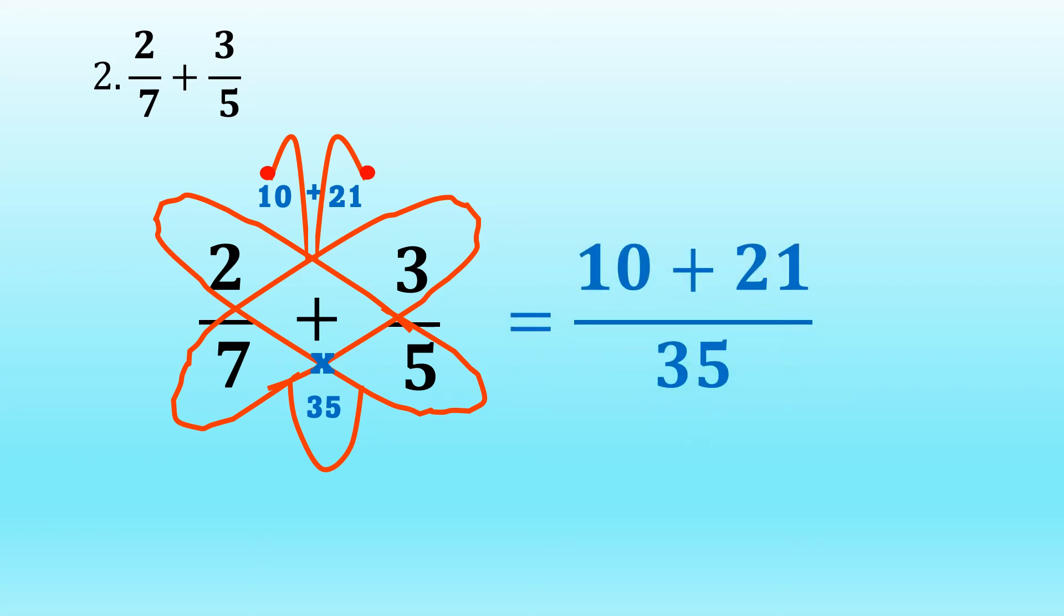Writing it formally, we can have ten plus twenty-one over thirty-five. So, ten plus twenty-one is equal to thirty-one. And then copy the denominator thirty-five. So, the sum of two-sevenths and three-fifths is equal to thirty-one over thirty-five.